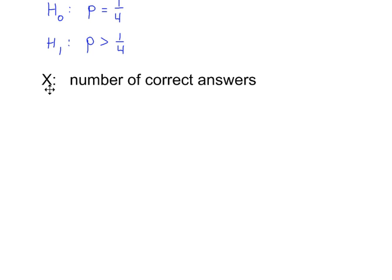X is a random variable which represents the number of correct answers. X follows a binomial distribution, there were 100 questions, and the probability is a quarter. There are no tables for n equals 100 available in the OCR formula book, so we have to use a normal approximation.